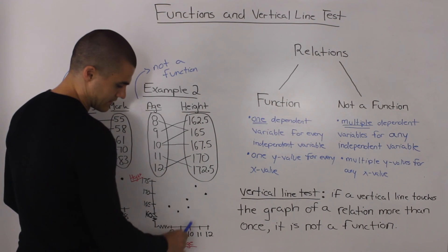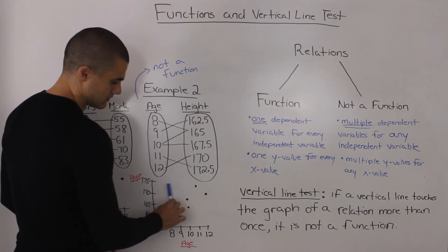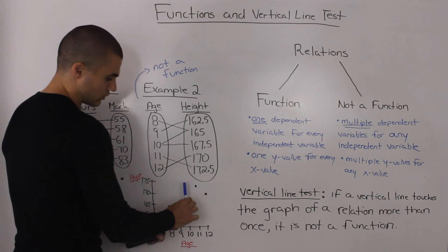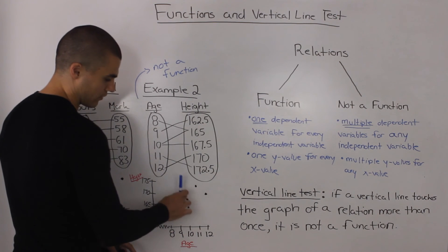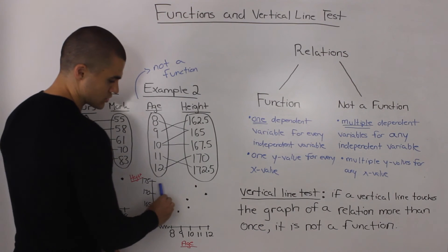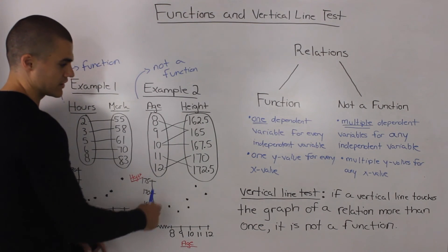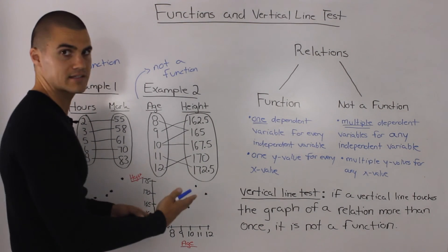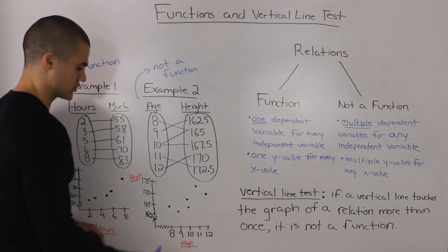notice how at this x value of 10, the vertical line touches the graph more than once. It touches it at two points. So right away we know that this relation does not pass the vertical line test and it's a non-function.